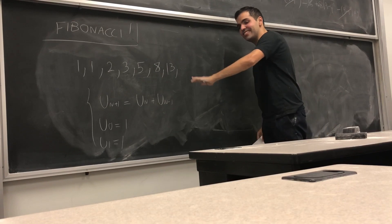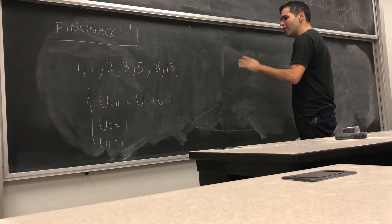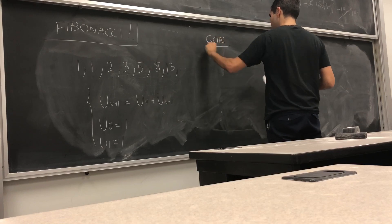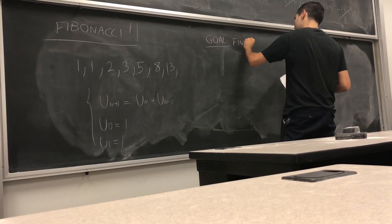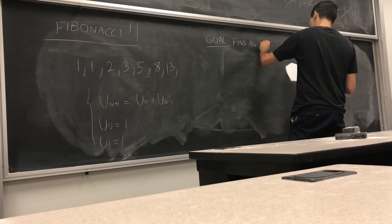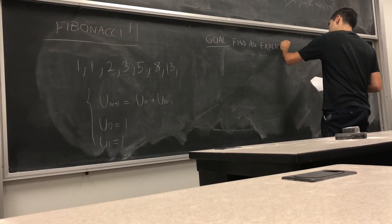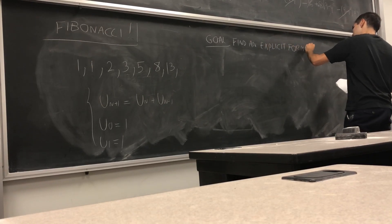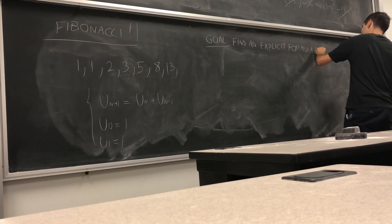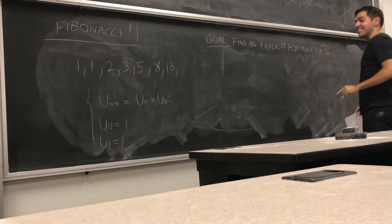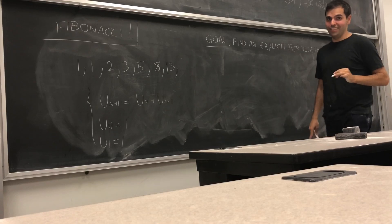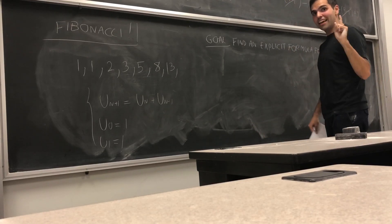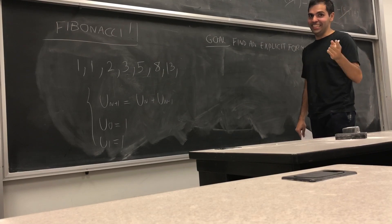Using diagonalization, we will find an explicit formula for u_n. And the answer may surprise you — it will involve a very famous number that is not pi and not e.